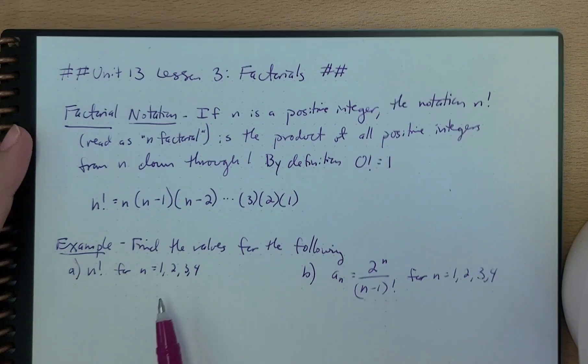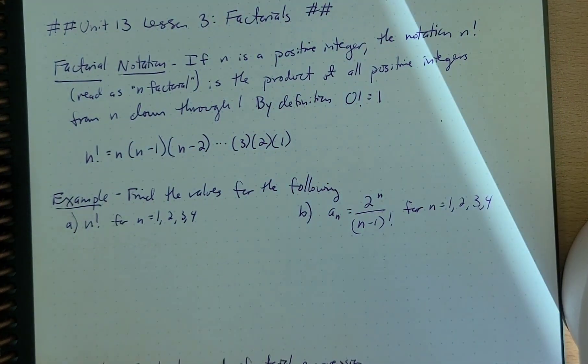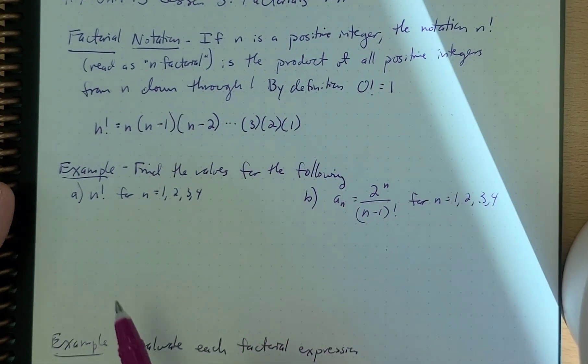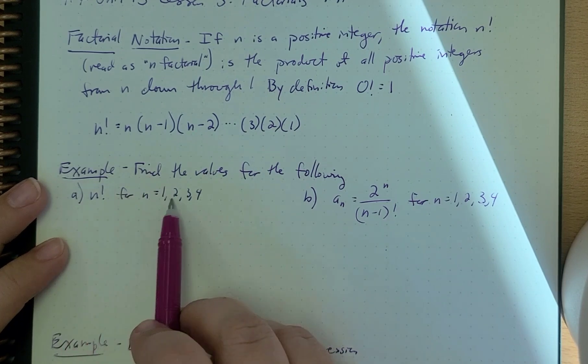So let's find the values for the following. This is actually so much easier than it initially looks. We're going to find n factorial for n at 1, 2, 3, and 4.